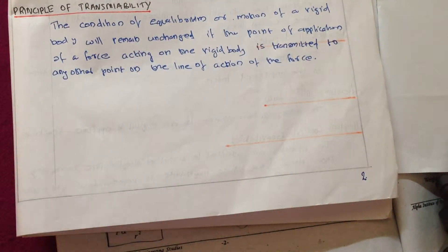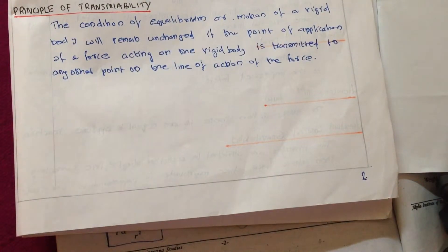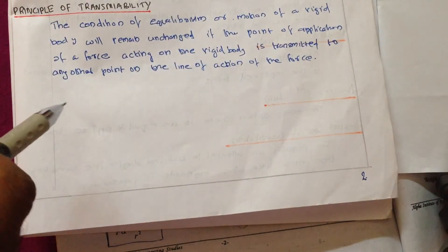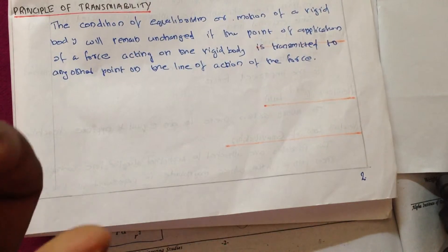What exactly it means is that if a rigid body is in equilibrium or in motion, it will remain unchanged when the point of application of a force already acting on the body is transmitted to any other point.